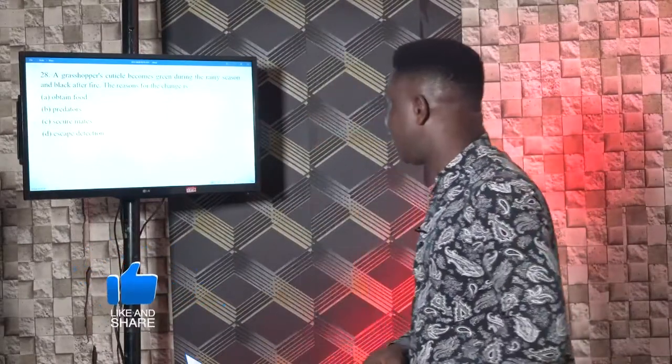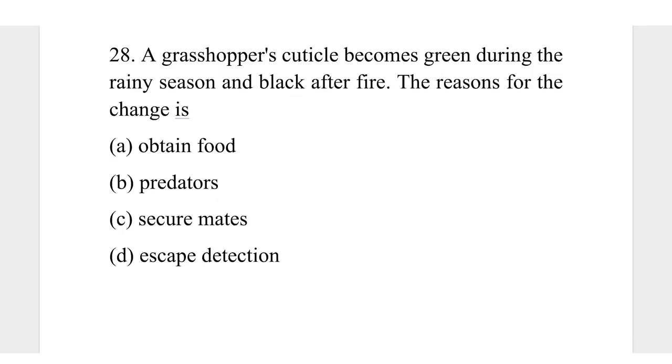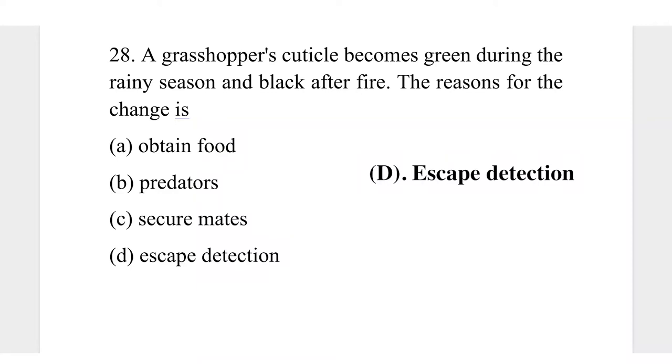Question 28. A grasshopper's color becomes green during rainy season and black after fire. The reason for the change is: A, obtain food; B, predators; C, secure mates; D, escape detection. The reason for the color change in a grasshopper is to avoid detection — both from predators and from prey. It changes its color to blend with the environment so that prey will not detect it and also to hide from predators. The correct answer is D, escape detection.